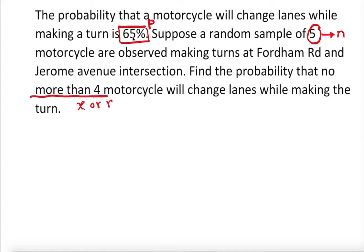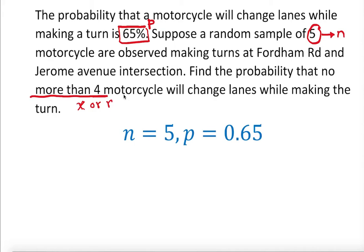Once we know this, we can use the formula table. n is the fixed number of trials, so n is equal to five. We know p is 65 percent. And 'no more than four motorcycles' — let's check that out very clearly. We have five trials: one, two, three, four, five.